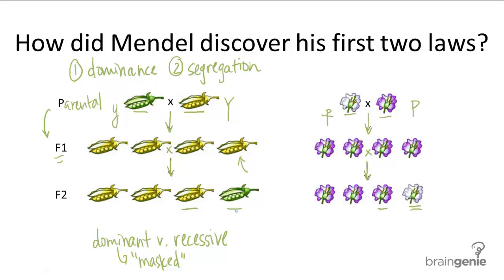This was only logical to explain why some flowers were purple while other flowers were white or some pea pods were green while others were yellow in the F2 generation.